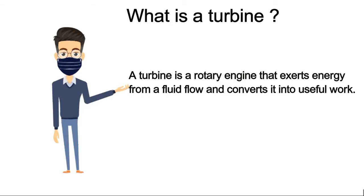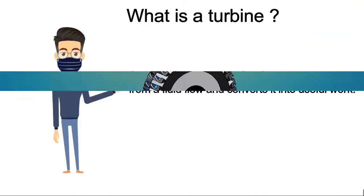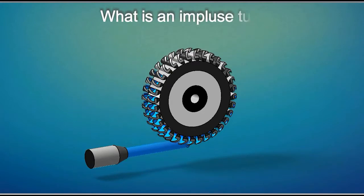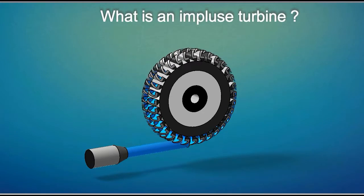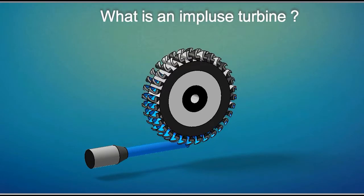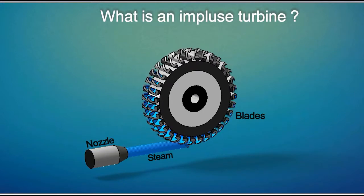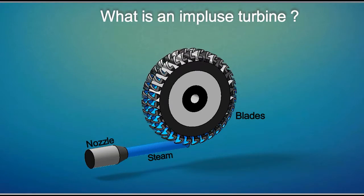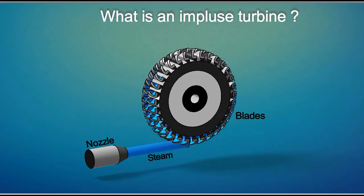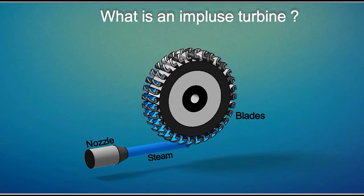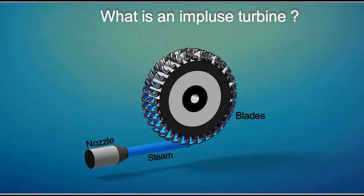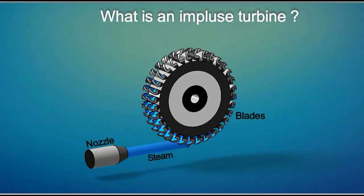Now let's look at what is an impulse turbine. An impulse turbine runs by the impulse of steam. A nozzle directs the steam onto curved blades, which causes them to rotate. The blades are in the shape of buckets. The energy to rotate an impulse turbine is derived from the kinetic energy of the steam flowing through the nozzle.